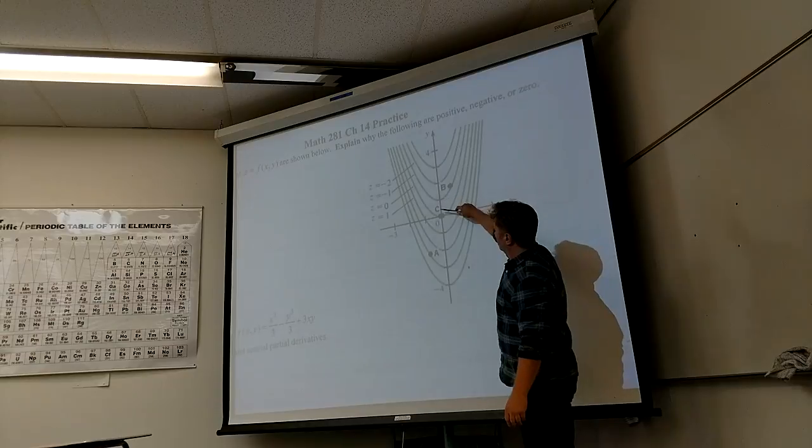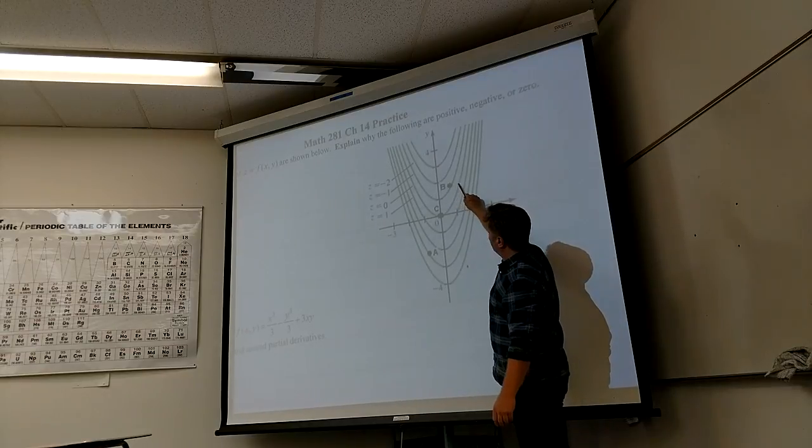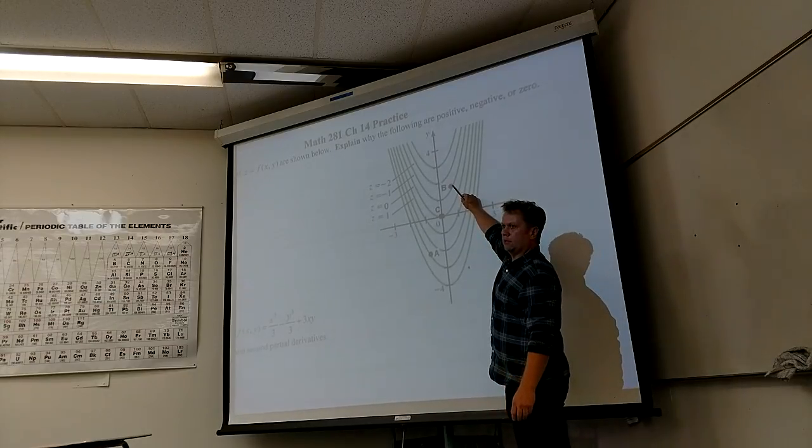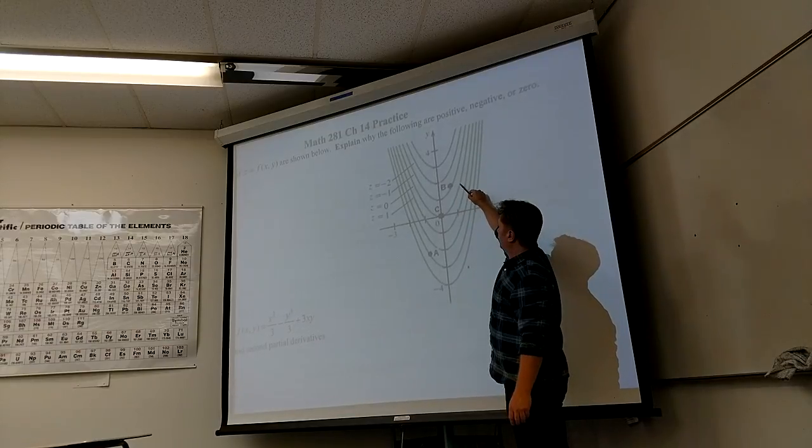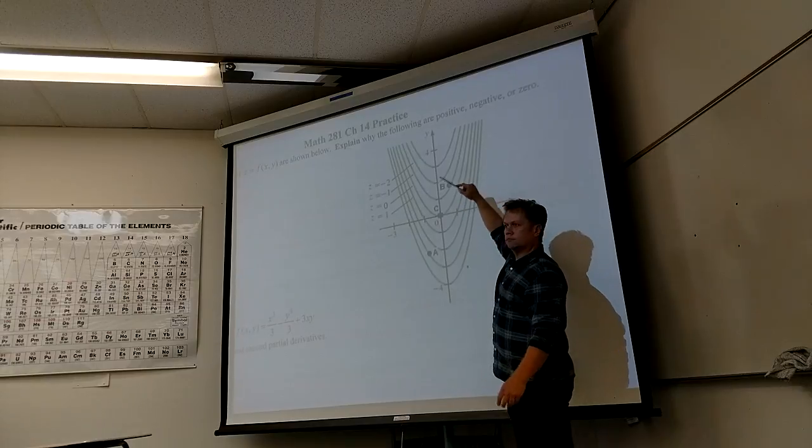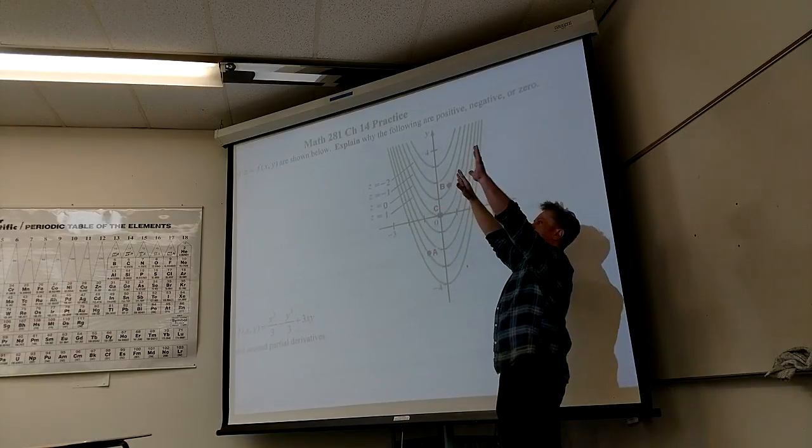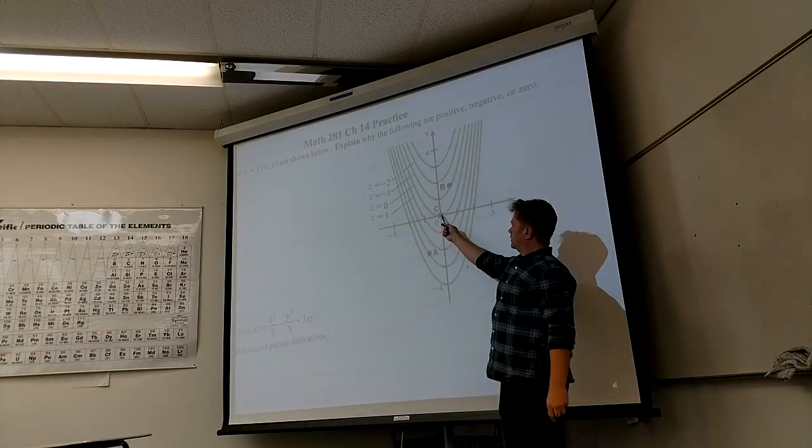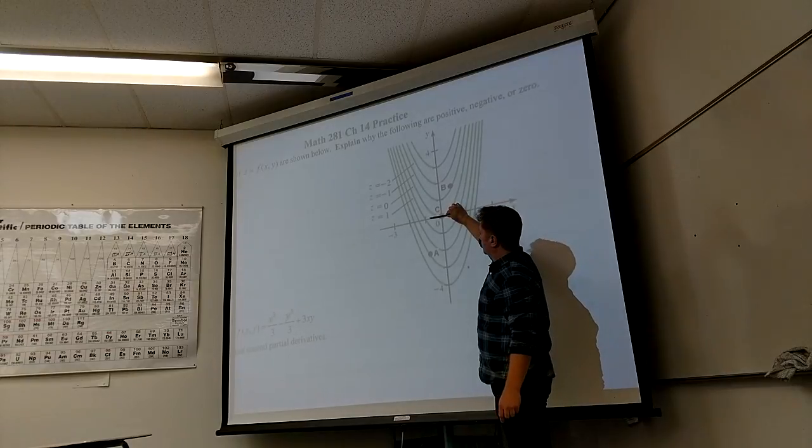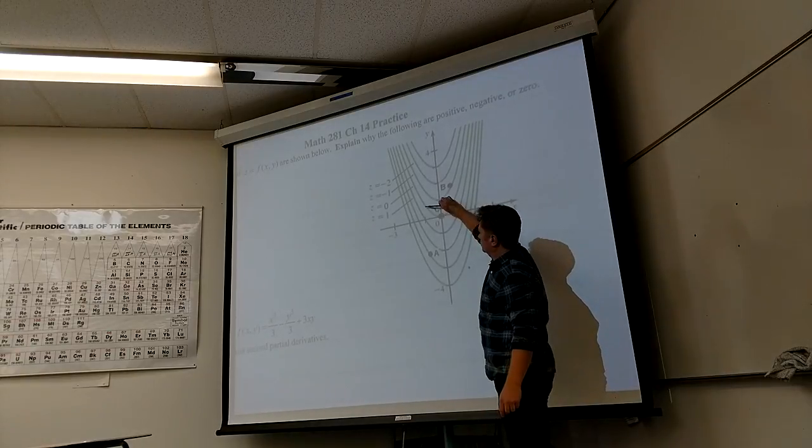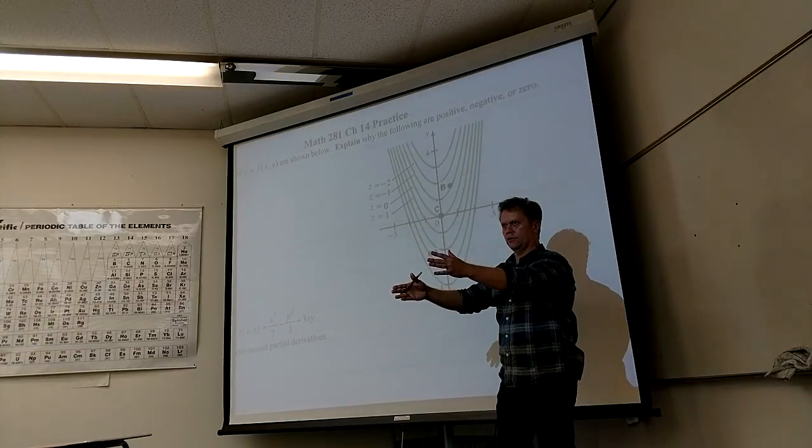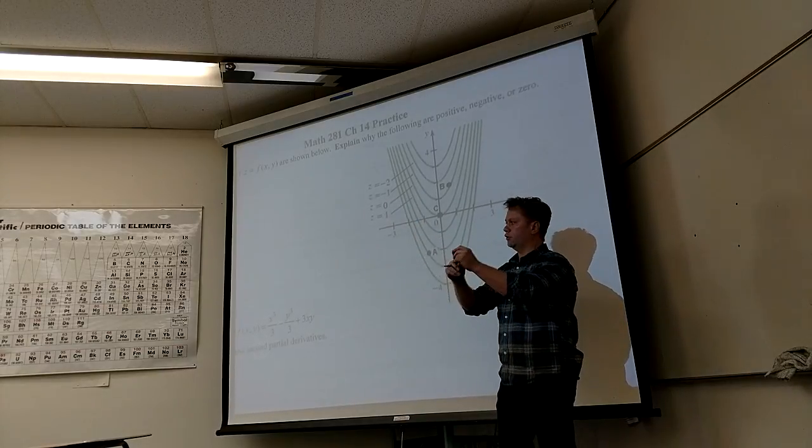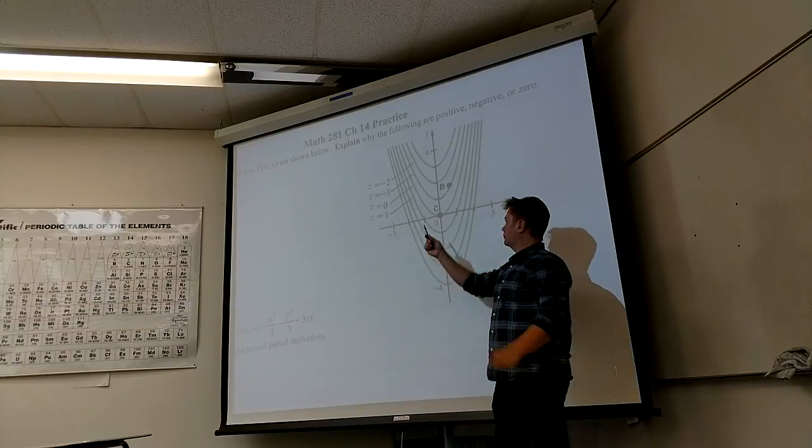Where am I at? And then at B, sort of the opposite thing happens, right? I'm climbing out of the bowl. So I'm here, and as I move in the x direction, I'm definitely approaching a higher level curve. So I'm going up. And then at C, this is the one we talked about, I'm going in the same direction as the tangent to the curve, the level curve, which means I'm following the level curve. And if I'm following the curve, I'm staying at the same height. So that would be zero at C.